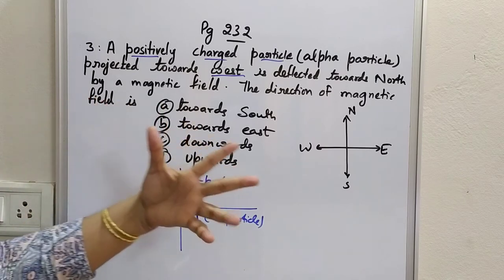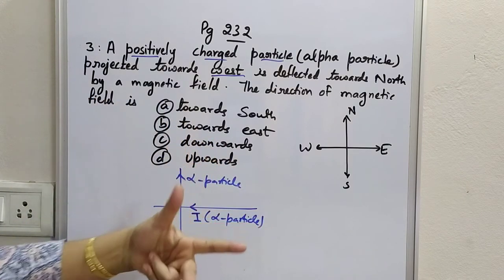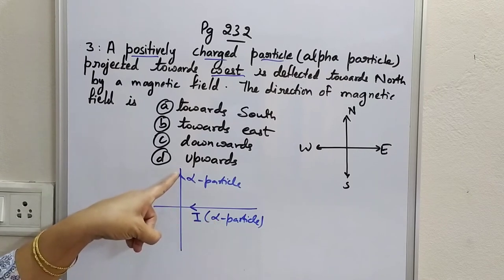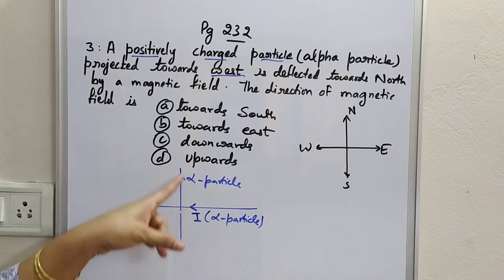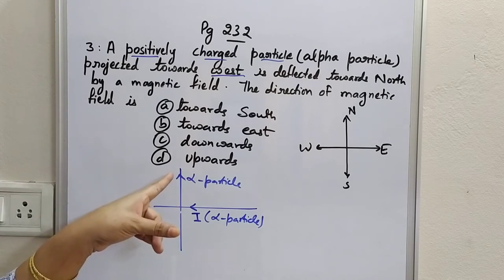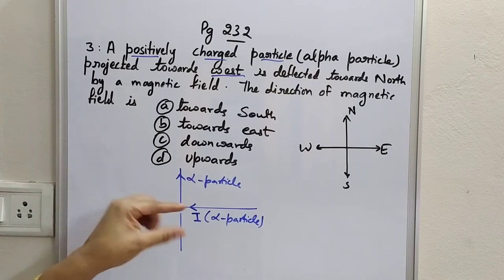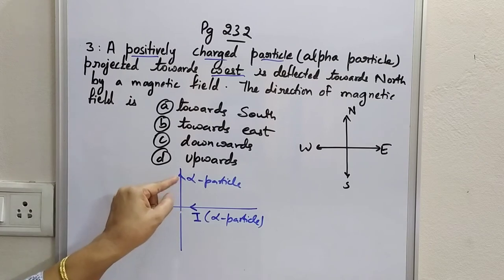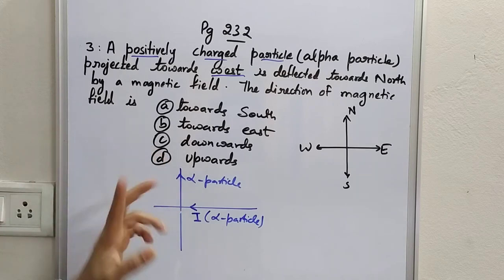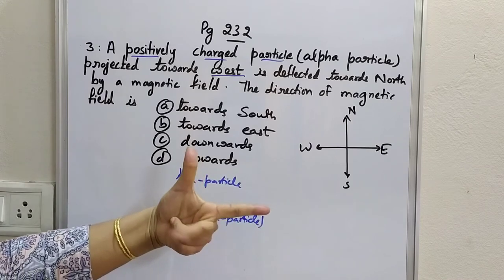We will apply Fleming's left hand rule. This alpha particle is deflected towards north. The direction of deflection, displacement, or force will be the same — whichever direction force is applied, that is the direction the deflection or displacement occurs. So: force, field, current.